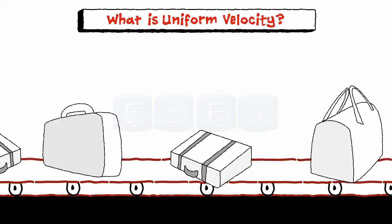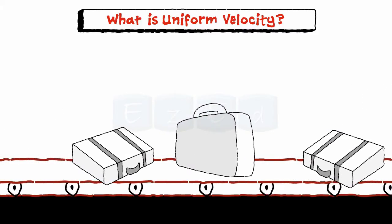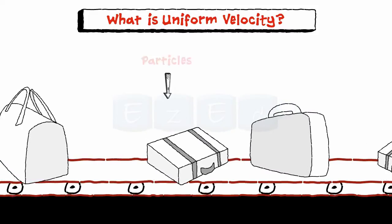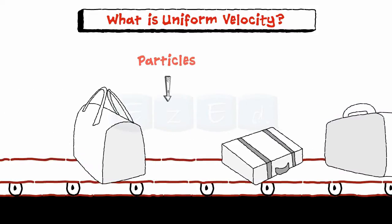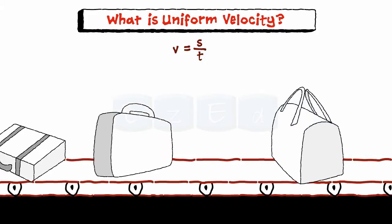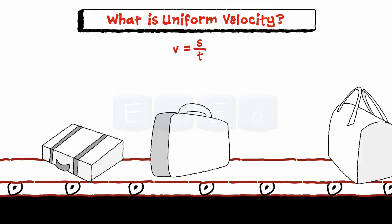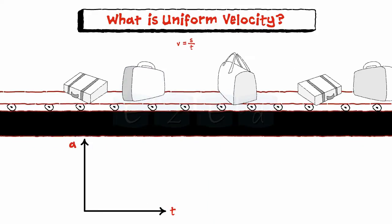What is uniform velocity? Bags moving on a conveyor belt move at a uniform rate. Here the bags are considered as particles. Therefore, if the particle moves with a constant velocity throughout the motion, then the particle is said to have uniform velocity motion. When the particle is performing uniform velocity motion, that is, its velocity is uniform throughout the period of time...